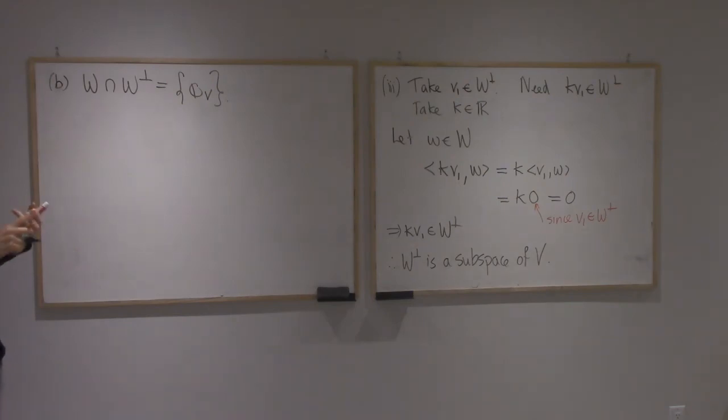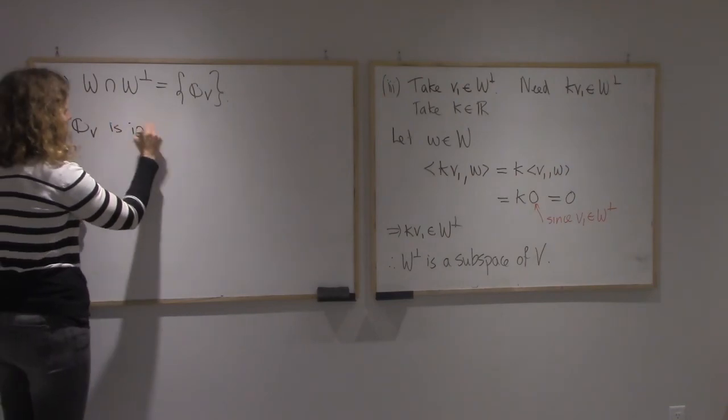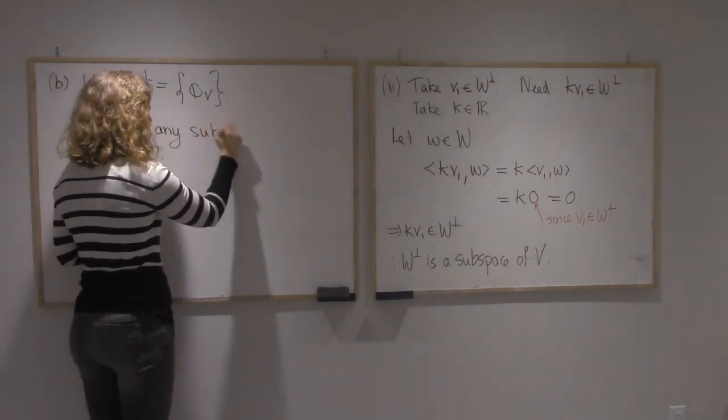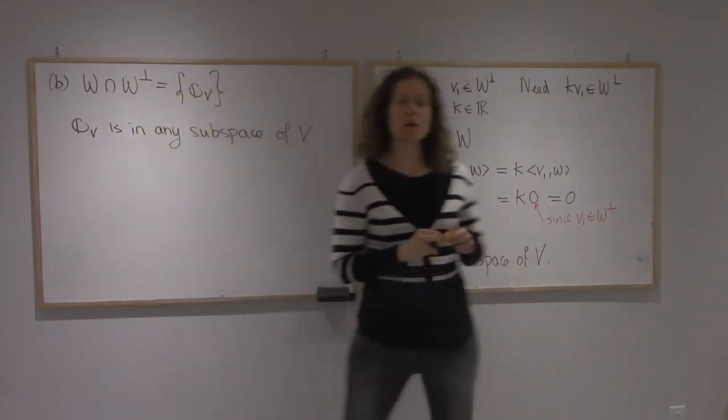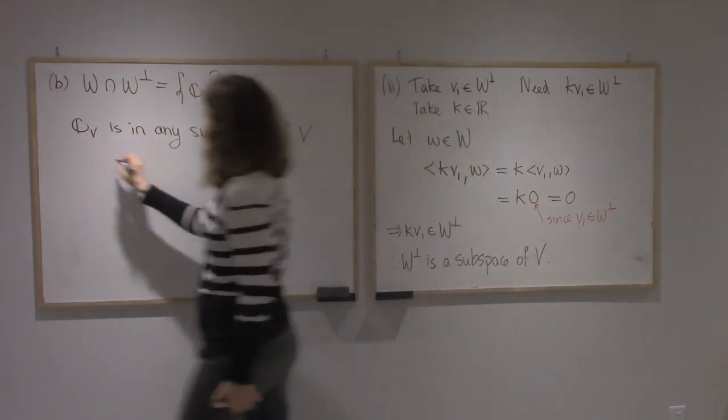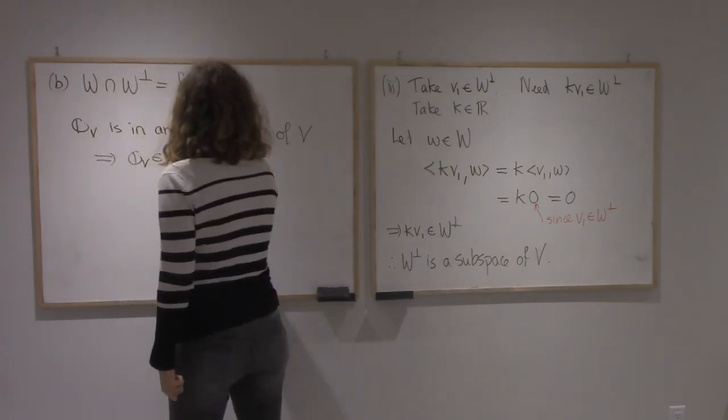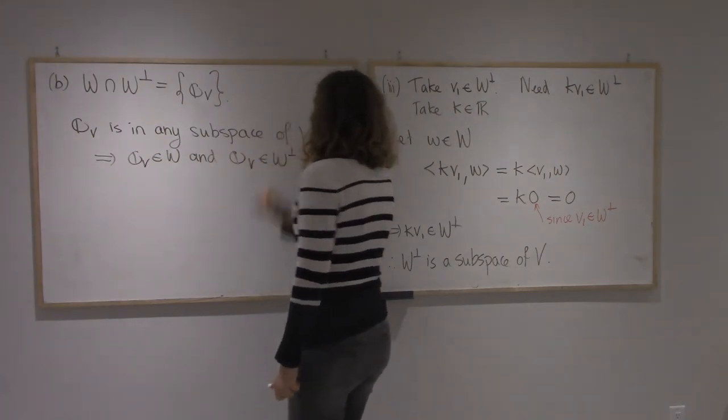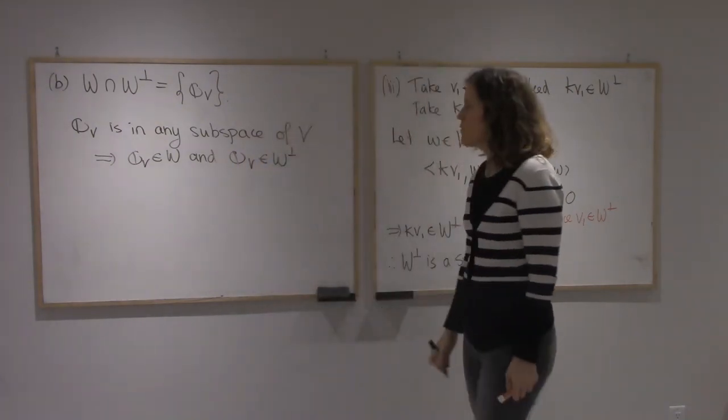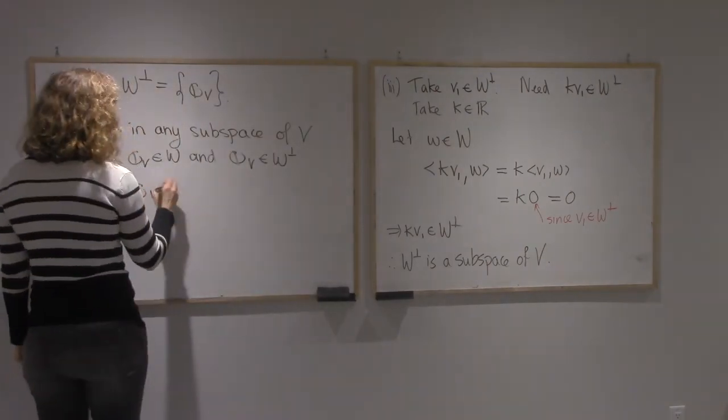Well, first thing, since we know that subspaces contain 0, that means that 0 is in W. We just proved it as well for W-perp. And so 0 is in both, which means that 0 is in the intersection.